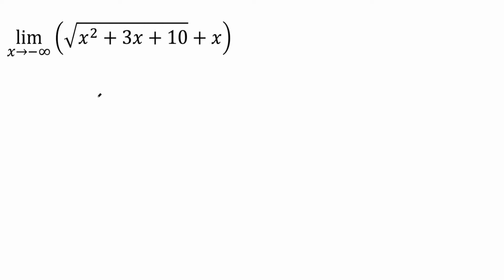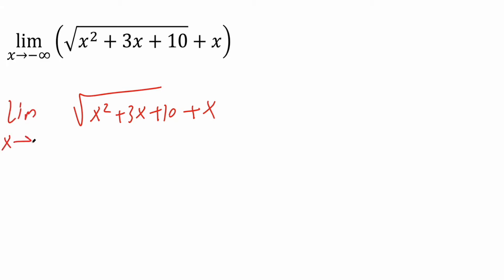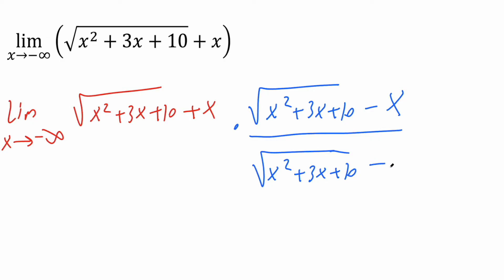What we're going to do is multiply by the conjugate. We have the limit as x approaches negative infinity of the square root of x squared plus 3x plus 10 plus x. We multiply by the conjugate: the square root of x squared plus 3x plus 10 minus x over the square root of x squared plus 3x plus 10 minus x. This is in order to get rid of the square root.